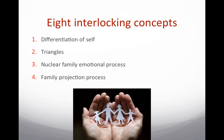There are eight interlocking concepts that are a major part of this theory. The first is differentiation of self — how individuals are able to think and act for themselves, and how people cope with life's demands and pursue their goals on a continuum from most adaptive to least adaptive. A person with a solid, well-thought-out sense of self is considered to have a solid self, while a person with a less solid self will feel pressure to think, feel, and act like other members of the system.